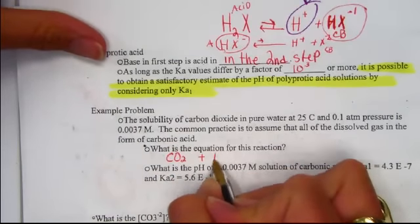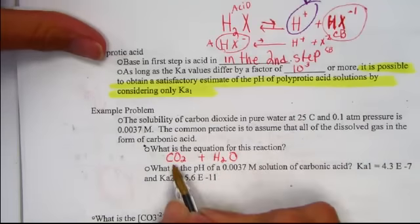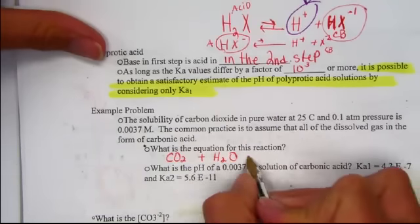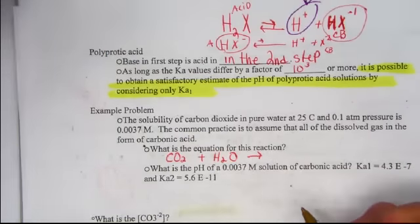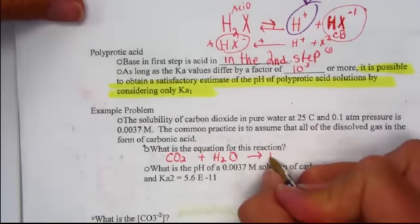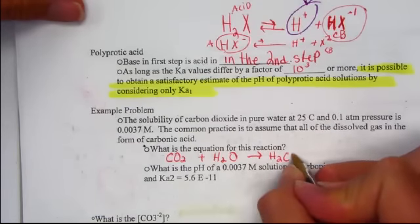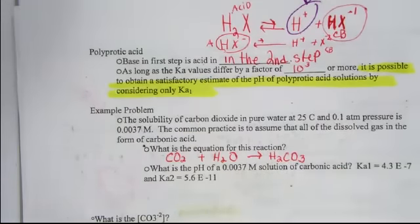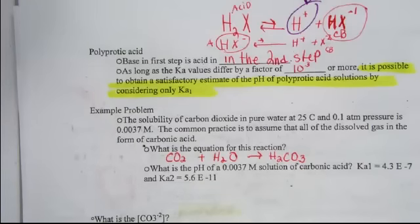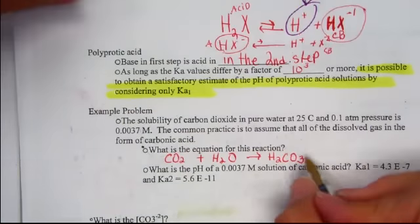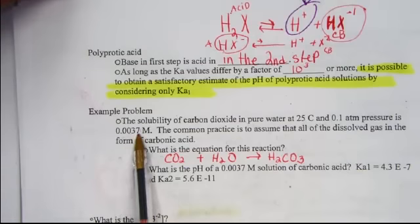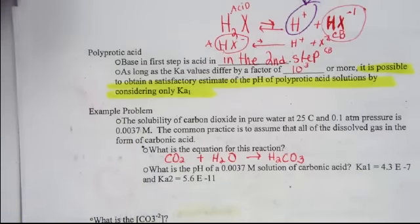into water, a non-metal oxide in water in a combination reaction. Non-metal oxides in water produce an acidic solution. Combination gives H2CO3, we'd call that carbonic acid. The concentration of carbonic acid is 0.0037 molar solution.